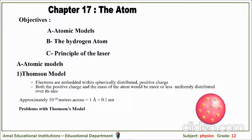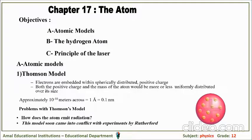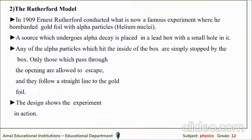The problem with Thomson's model was: how does the atom emit radiation? He could not answer it, and this model came into conflict with the experiment of Rutherford.